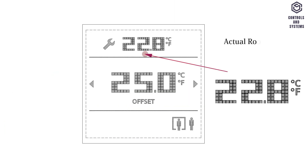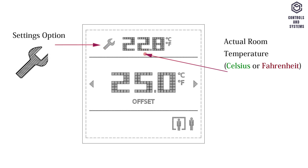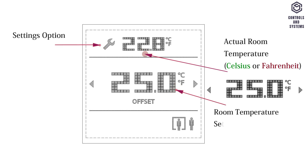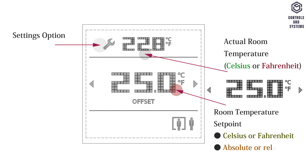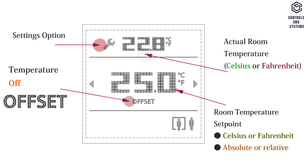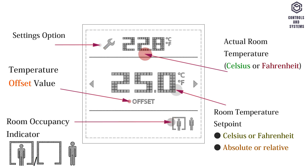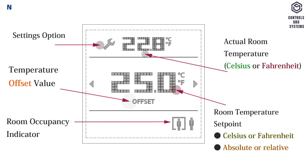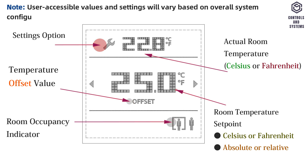Operation: this is actual room temperature in Celsius or Fahrenheit. This is the settings option and adjustable room temperature set point in Celsius or Fahrenheit, absolute or relative. This is temperature offset value, this is room occupancy indicator, and occupancy status change over via button. Note: user accessible values and settings will vary based on overall system configuration.